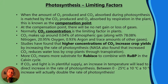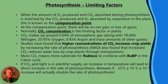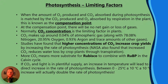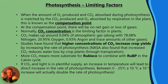If CO2 and light are in plentiful supply, an increase in temperature will lead to a direct increase in the rate of photosynthesis, because temperature will then be the limiting factor. Between 0 and 25 degrees Celsius, a 10 degree increase in temperature will actually double the rate of photosynthesis — doubling the rate that organic molecules can be produced, measurable as doubled oxygen output or CO2 absorption.